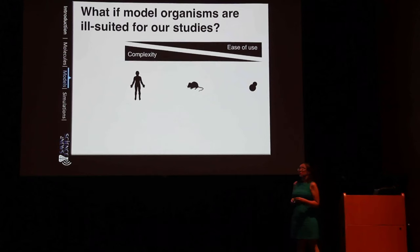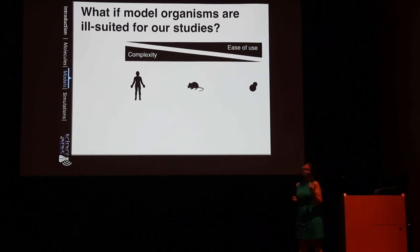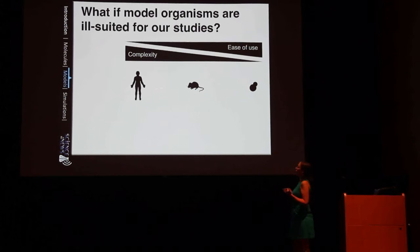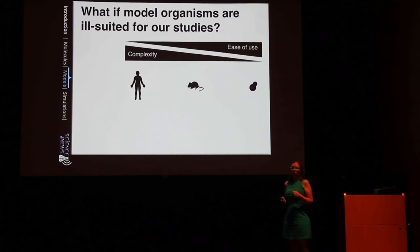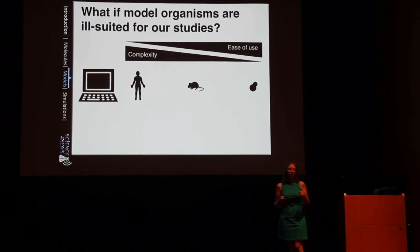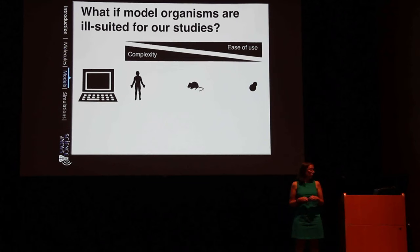Sometimes we really can't find a model organism that is well-suited along this scale of complexity. So what do scientists do when there is no model organism that can address the question we want to ask? At that point, we can turn to computer models to help us gain an even better understanding of what's happening in real cells. And that's what Max is going to talk to you about.